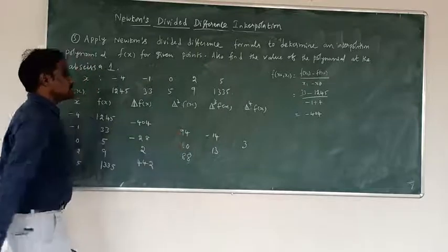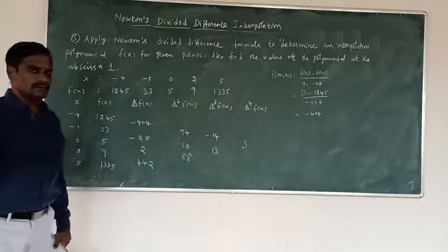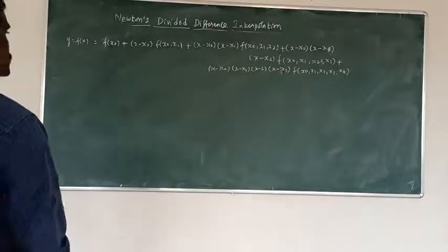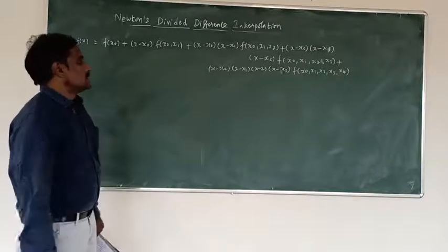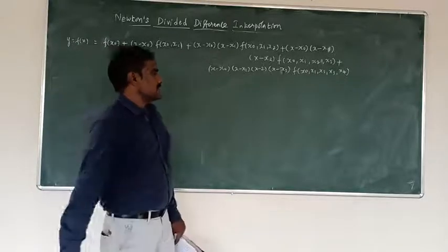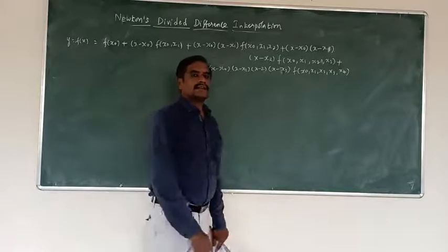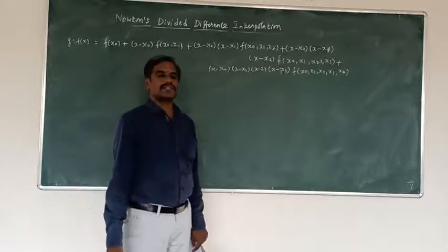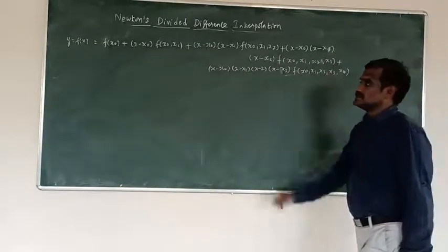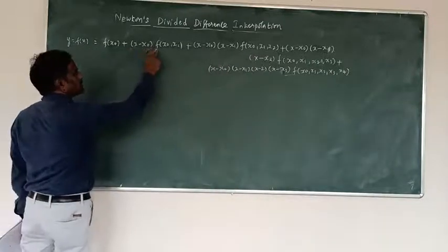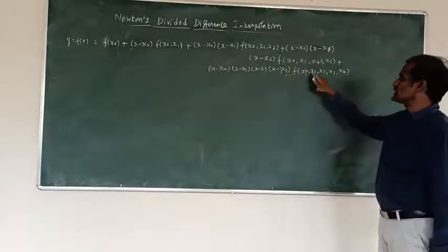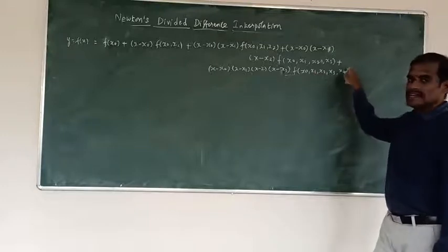Substitute these values into Newton's divided difference formula. The difference table goes up to delta power 4, the 4th divided difference. We can extend the formula up to f[x0, x1, x2, x3, x4], which is the 4th order term.